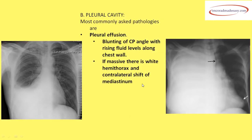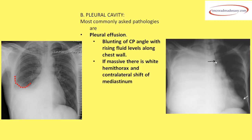Moving more inwards, we go to the pleural cavity. The most commonly asked pathology is pleural effusion, seen as blunting of the CP angle — there is opacity in the CP angle instead of a sharp margin, with rising fluid levels along the chest wall. In massive pleural effusion, the hemithorax is completely opaque (white-out lung), causing a mass effect and shift of the mediastinum — trachea and cardiac apex — towards the contralateral side.